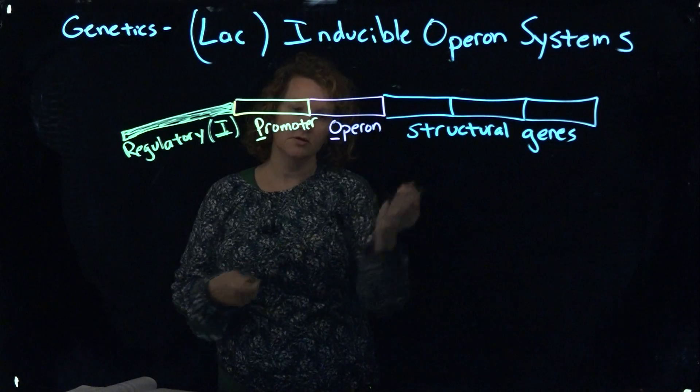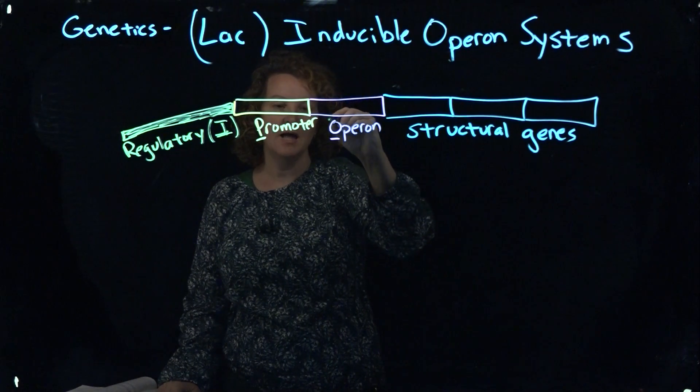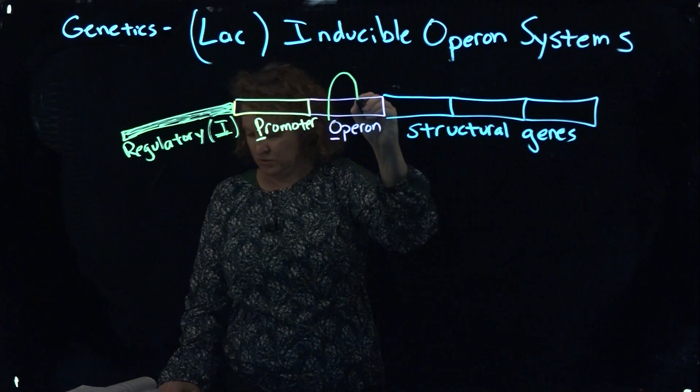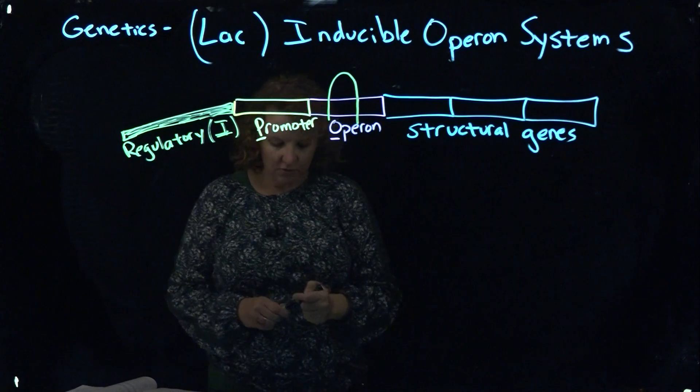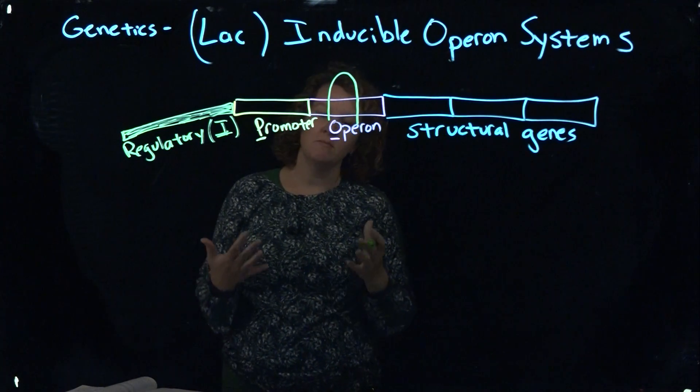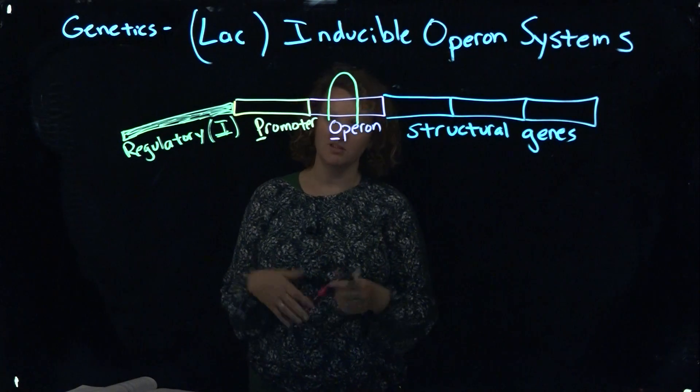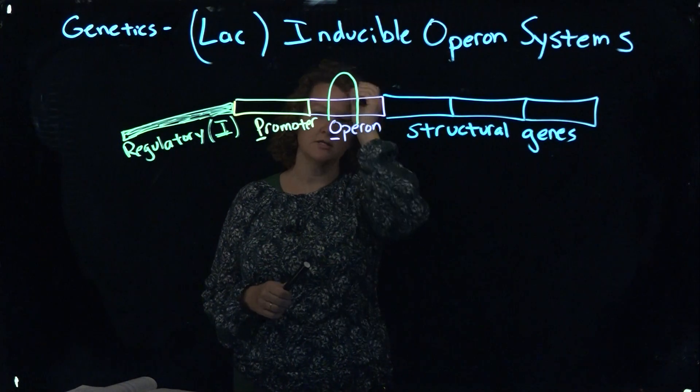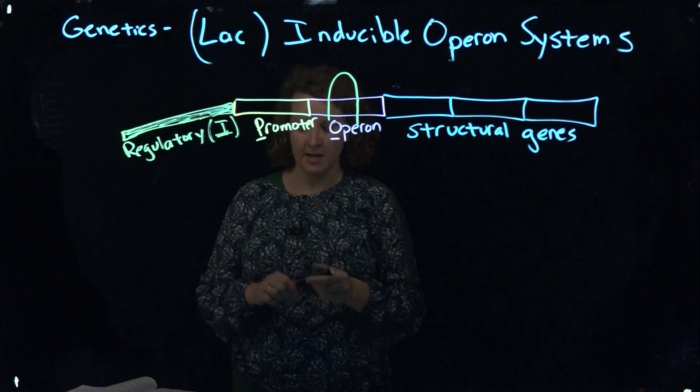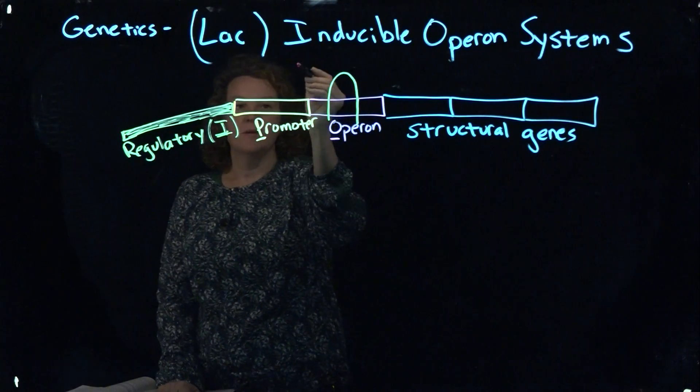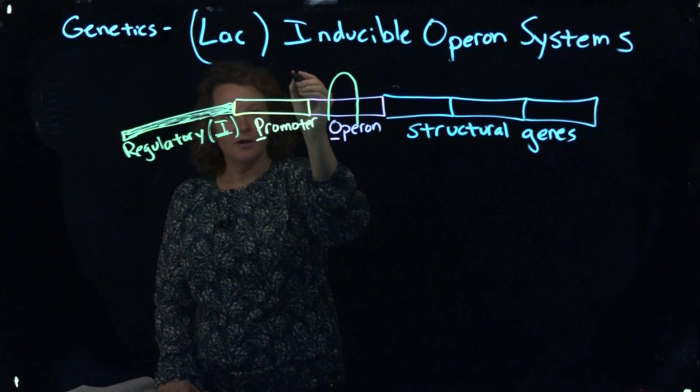And so the repressor is a protein that can bind to the operon itself. So if you remember what the enzyme is that manufactures messenger RNA, or is responsible for catalyzing the synthesis of messenger RNA, it's RNA polymerase.